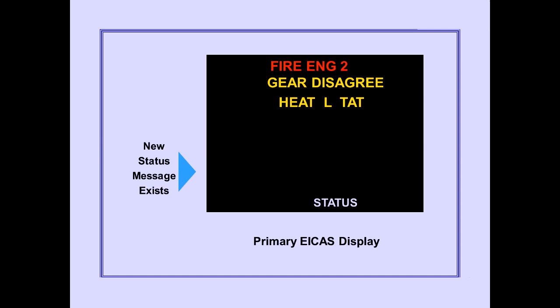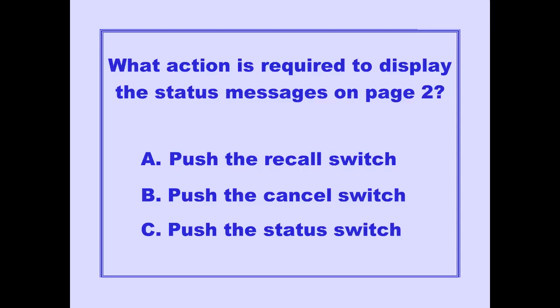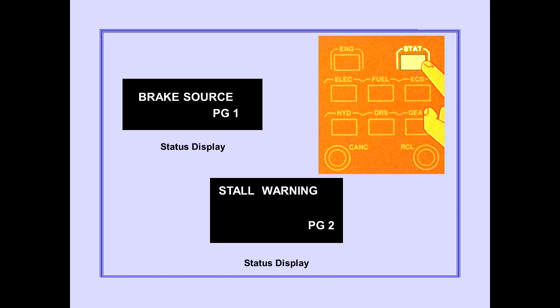The status queue indicates that a new status condition exists. When the status display is selected, the status queue is no longer displayed. Pushing the status display switch on the ICAST display select panel displays the messages on page 2.